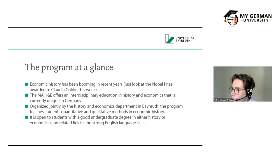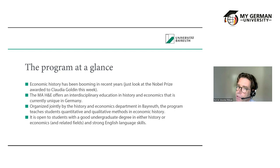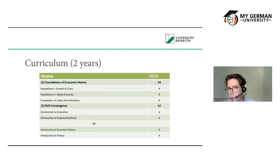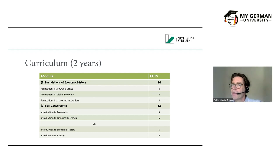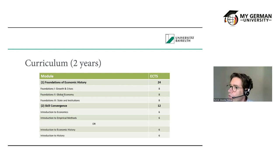The program is open to students with a good undergraduate degree in either economics or history. The second requirement is strong English language skills, as it's taught entirely in English. It's a two-year program. Foundational courses include Growth and Crisis — addressing why some countries are rich and others are not — as well as the Evolution of the Global Economy, and a third course on States, Institutions and long-run economic development.